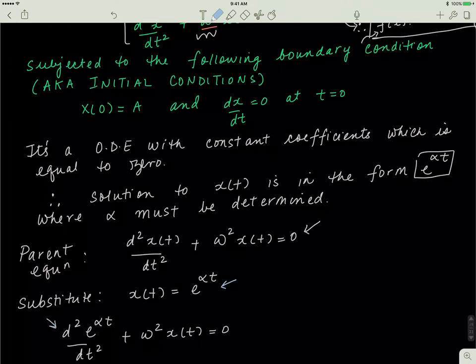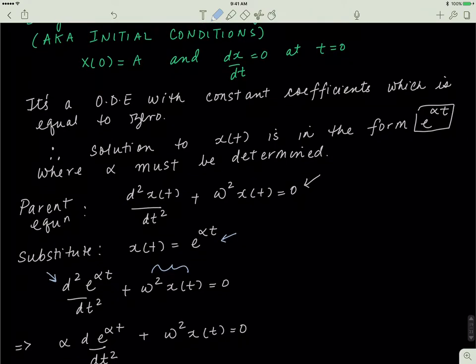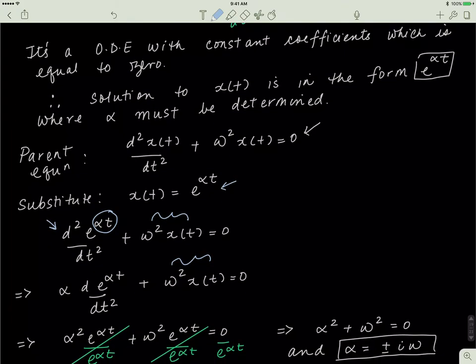When I substitute, I'm left with this equation. I have to take the derivative of e^(alpha·t) twice, and everything else is in algebraic form. If I take the derivative of e^(alpha·t) once, I'm left with e^(alpha·t) times alpha — that's the chain rule, since the derivative of alpha·t with respect to t is just alpha. Taking the derivative again, I'm left with alpha squared times e^(alpha·t). Dividing the whole equation by e^(alpha·t), I'm left with alpha squared plus omega squared equals zero.